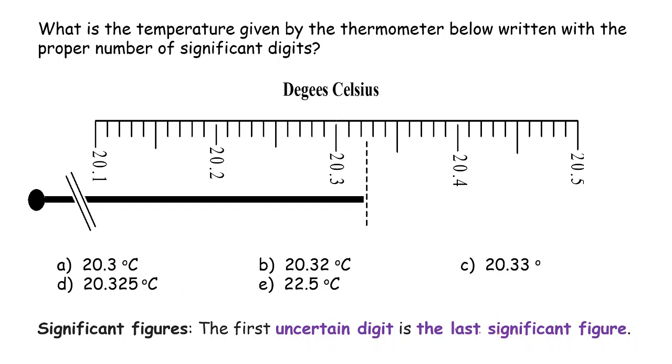Based on this definition, the last digit, the last significant figure, which is after the decimal point, the first decimal place, that one is uncertain. Is that true with this problem with what shows here?